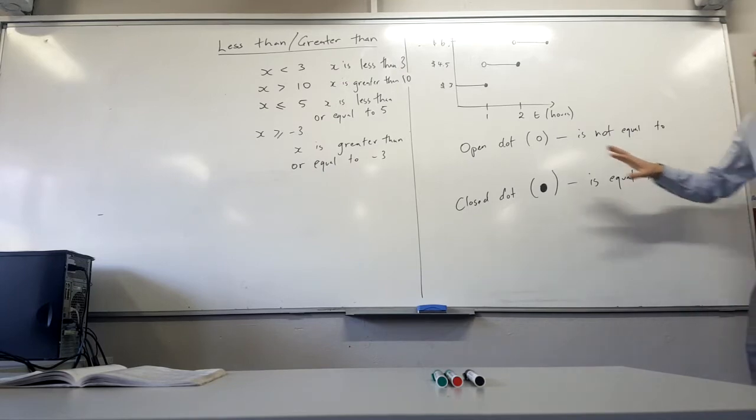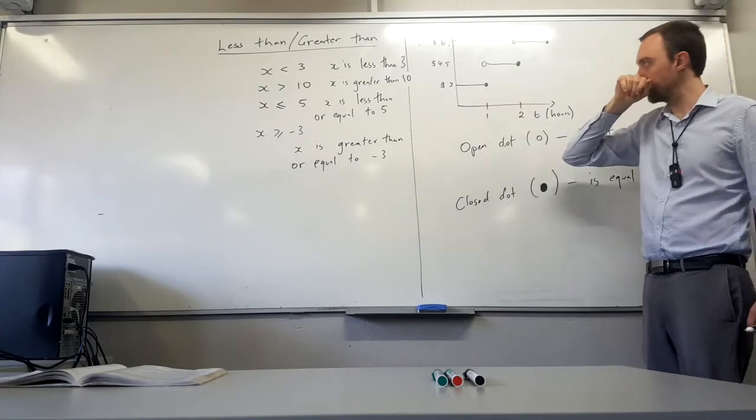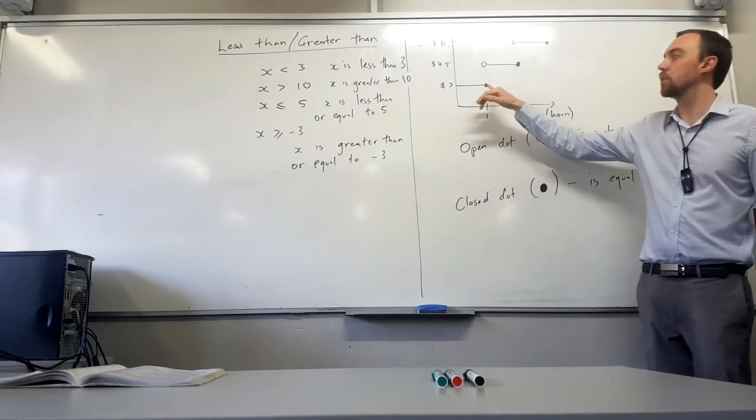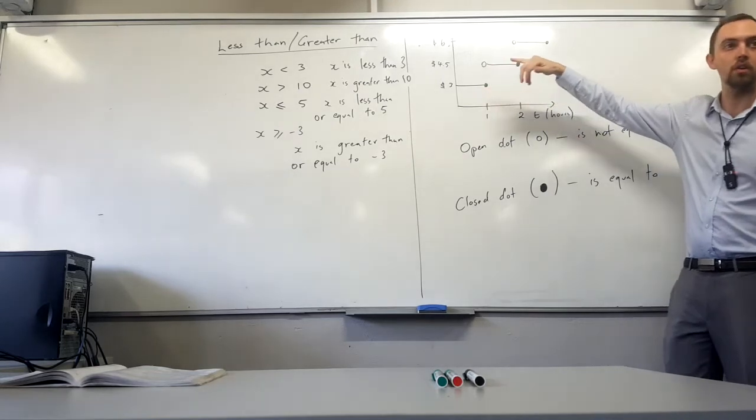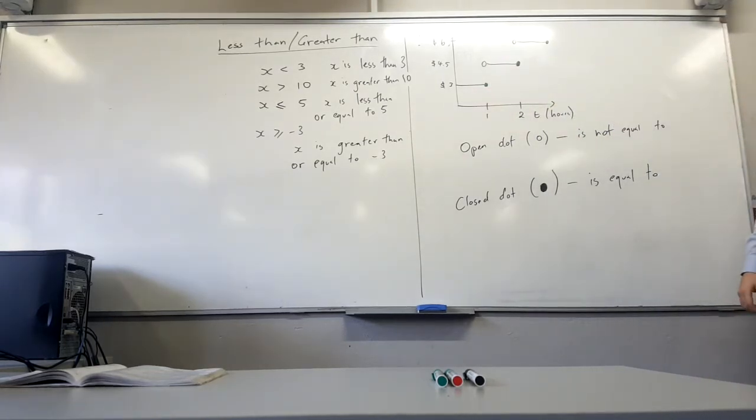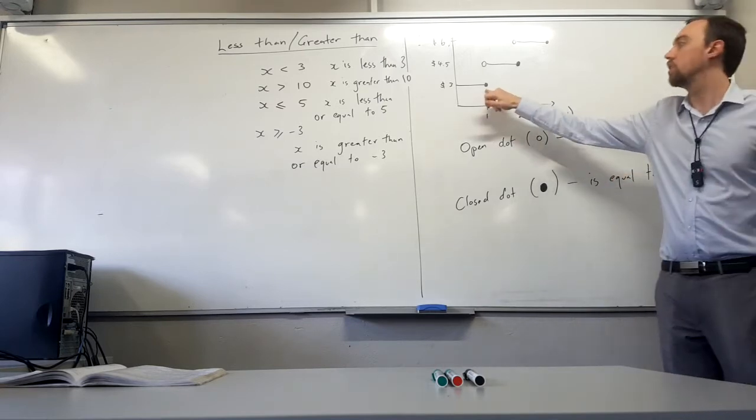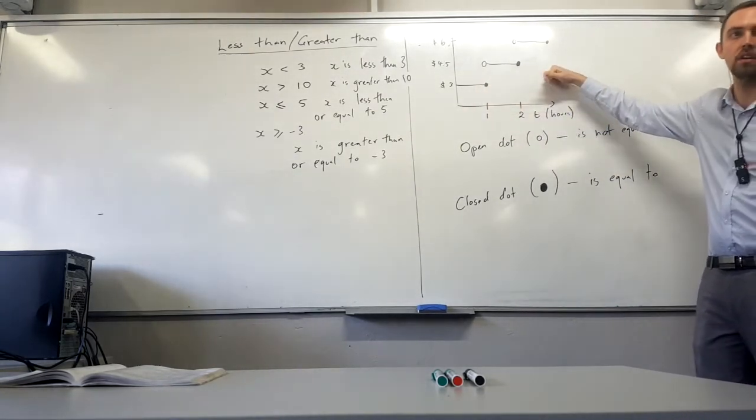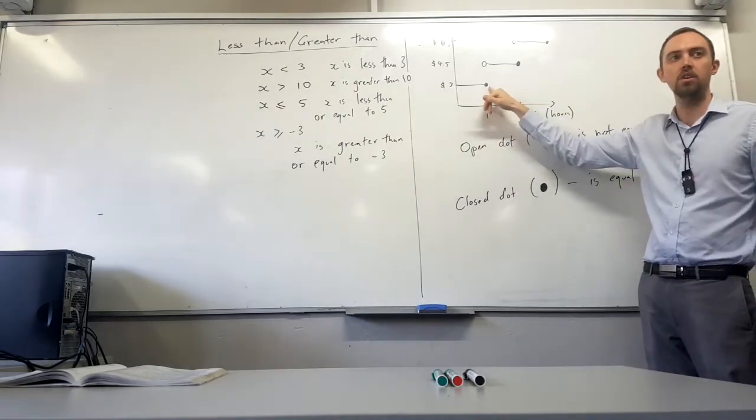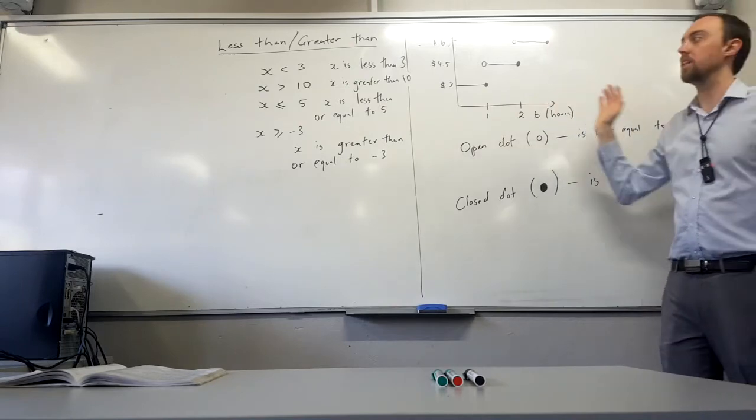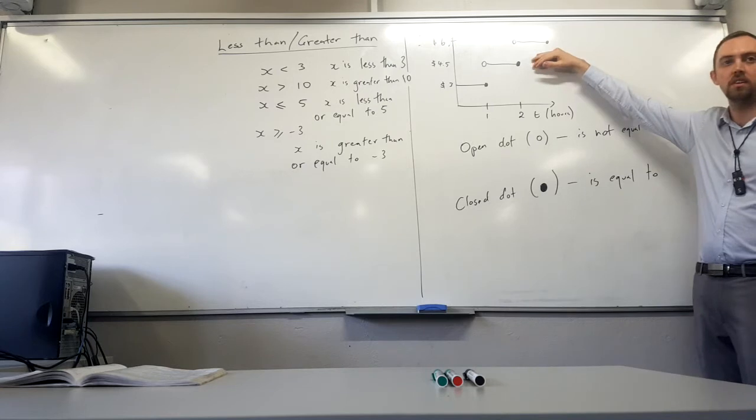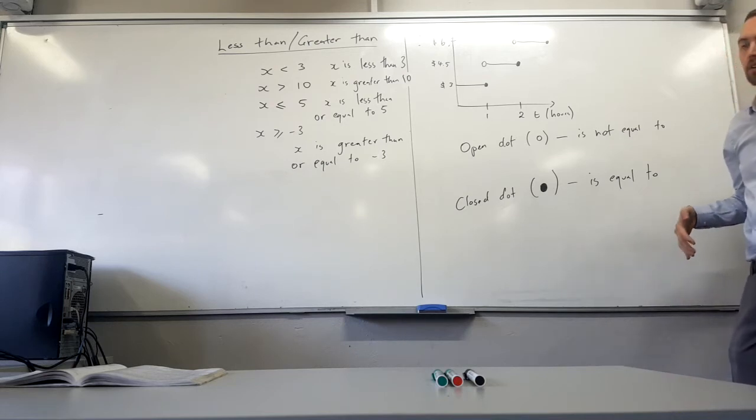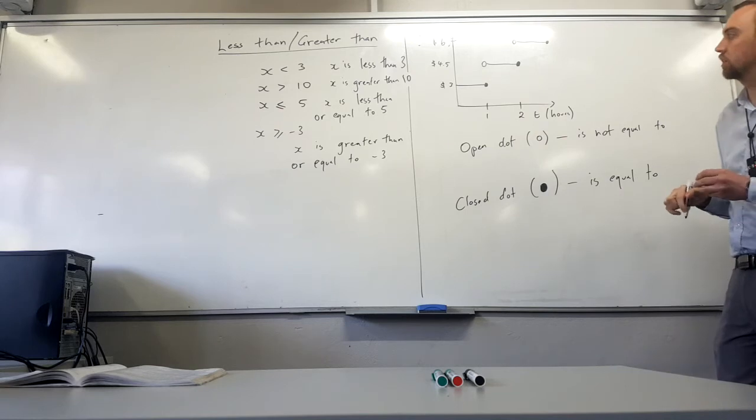So going by our open or closed dot, this might be time in hours for your parking. So for the first hour you might be charged $3, and then the second hour you might be charged $4.50, third hour you might be charged let's just go $6. So at one hour, if this is the graph you were given, am I being charged $3 or am I being charged $4.50? Without understanding what these dots mean, we can't really make that decision. Closed dot's down here at the end of the one hour.